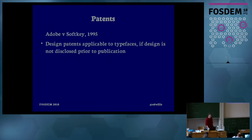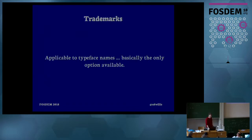The design patent situation comes from Adobe suing Softkey; they were told you could get a design patent — like the kind covering the shape of your iPhone — but you have to follow conditions in advance, like not showing the design to anyone for a predetermined amount of time, a year or two. The trademark thing is what you normally see, because it makes sense: the name is what people see in the font menu, and you generally want your name visible there. So it's the only viable option and that's why it gets so much attention.